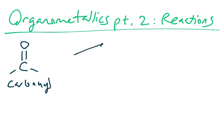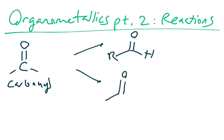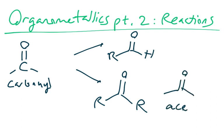A carbonyl can be one of two things. We can have an aldehyde and we can have a ketone. Aldehyde comes from 'alcohol and dehydrogenation' — if you take an alcohol and remove hydrogen, you get an aldehyde. Ketone comes from acetone — in Old German it was called 'acetone,' and somebody broke that apart and made 'ketone.' So that's where the names come from.